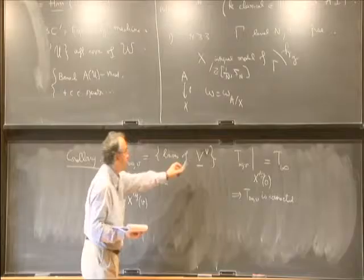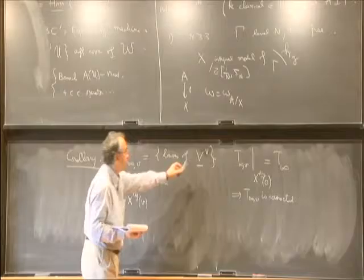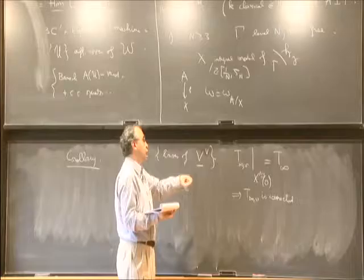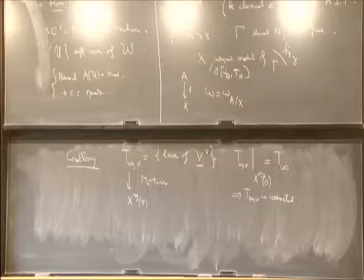Now the modular interpretation of V and therefore of the overconvergent Igusa tower becomes more complicated. It is no longer obvious, because V is not crystalline — it is not directly connected with torsion points of Abelian schemes. It is defined in differential terms.